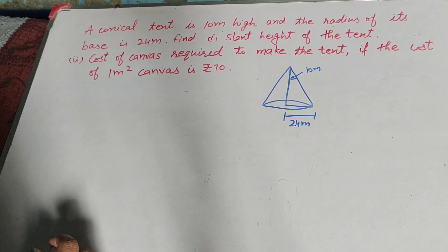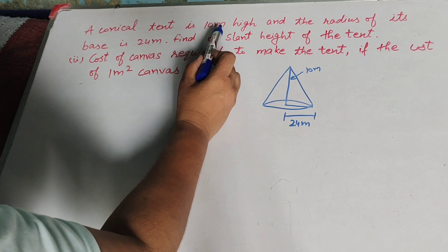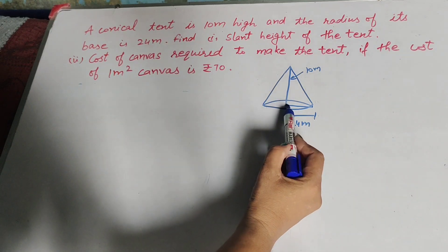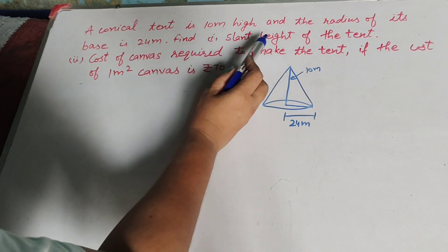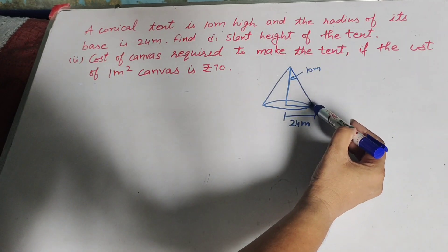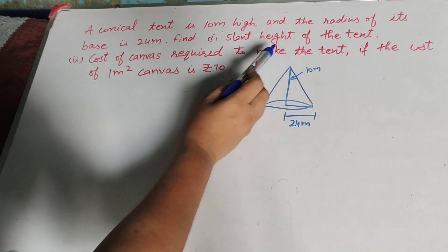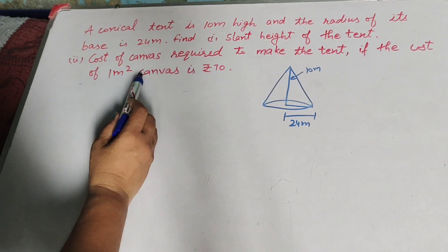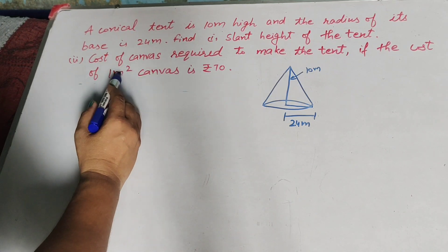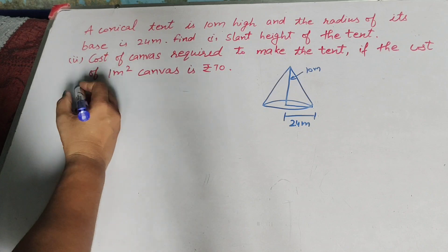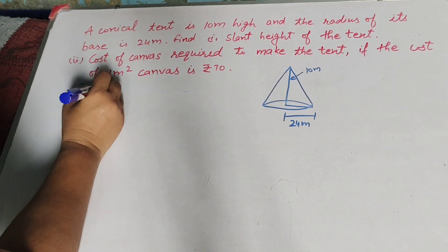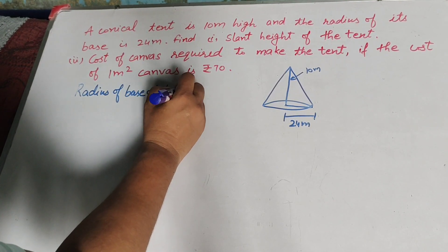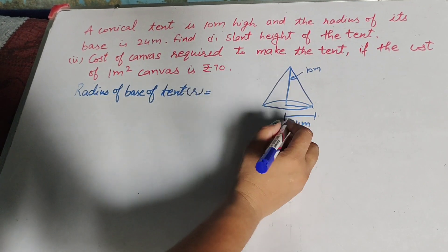Hello friends, welcome to my channel. In this video we discuss a conical tent problem. The height of the tent is given as 10 meters and the radius of its base is 24 meters. We need to find the slant height of the tent and the cost of canvas required to make the tent, if the cost of one meter square canvas is rupees 70.